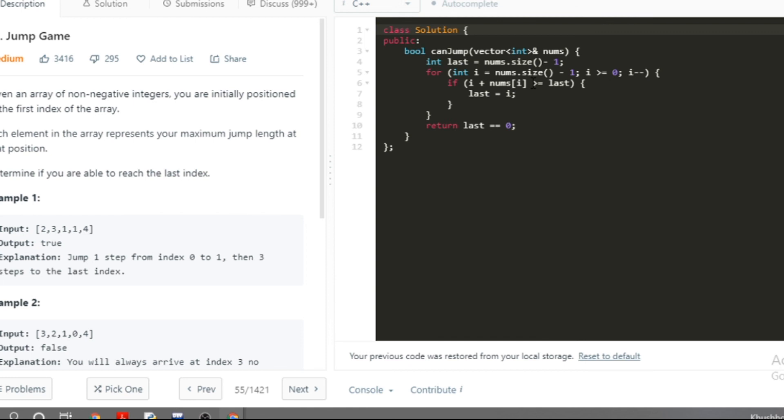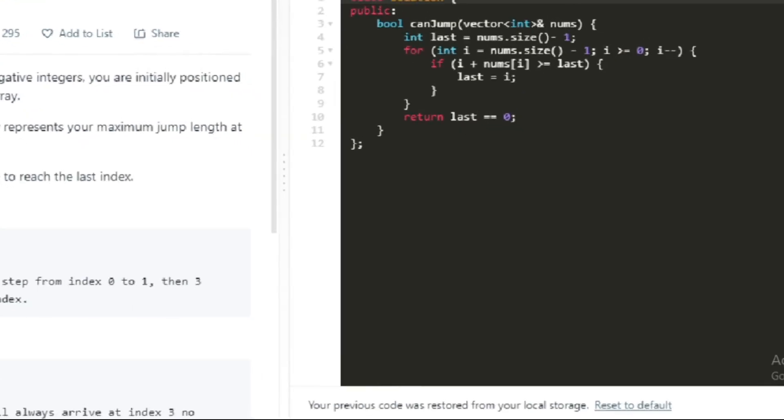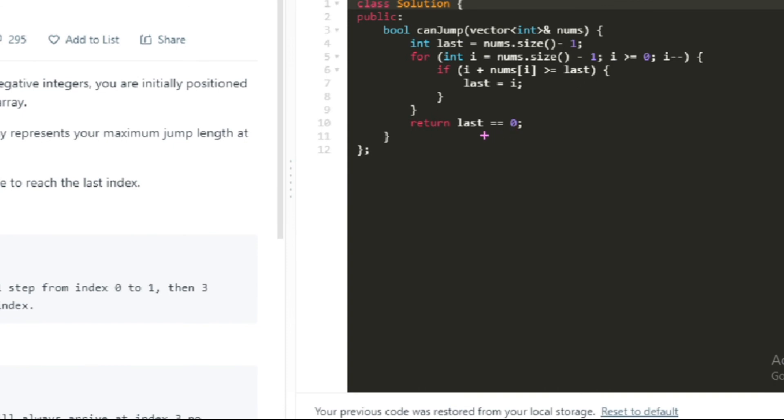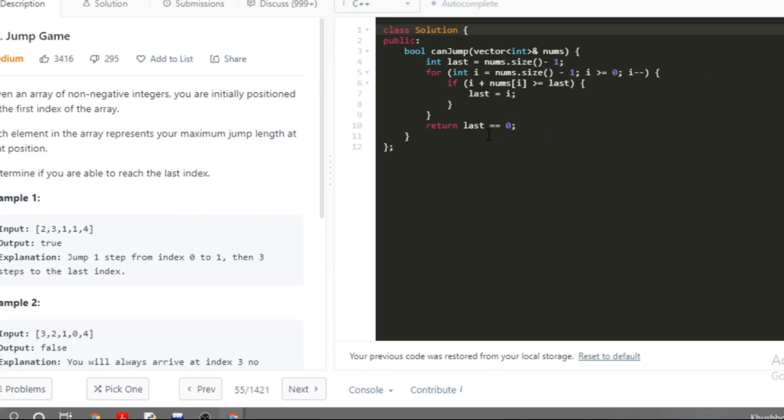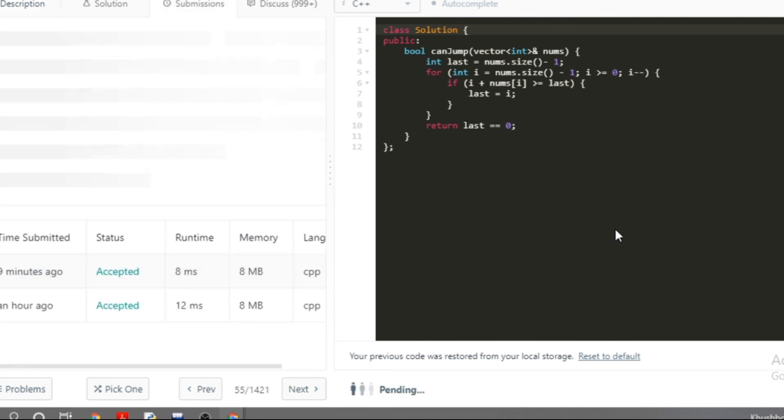Then if we can reach to the last index, when our loop stops, if the last element is equal to zero then it is a true statement. And if it is not equals to zero, then it is a false statement. Let's check if this code works fine or not. So our code gets accepted, so yes.